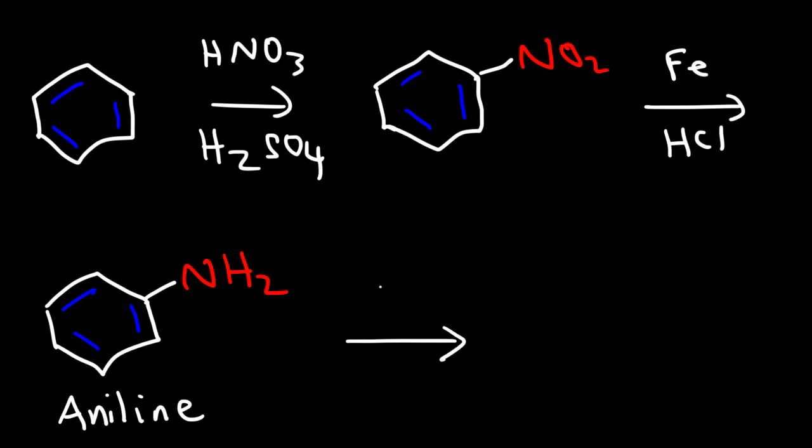And then if you want to, you can react aniline with an acid chloride. What can happen is the NH2 group can react with the acid chloride, giving us an amide functional group. So that's how we can make an amide using aniline.